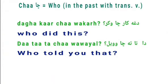The next example means 'Who told you that?' — 'Da' means that, 'Tata' means to you, 'Cha' means who, and 'Wawail' means told. This sentence is again in past tense, that's why we use 'Cha' and not 'Tsok'. 'Wail' means to say something and it is a transitive verb.